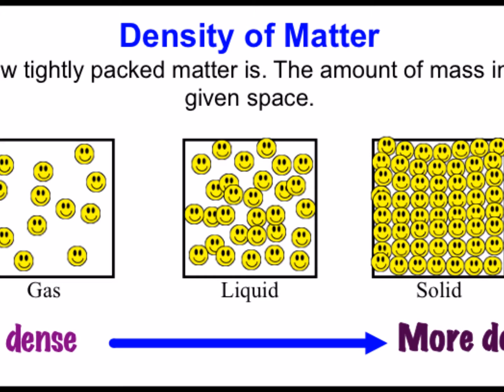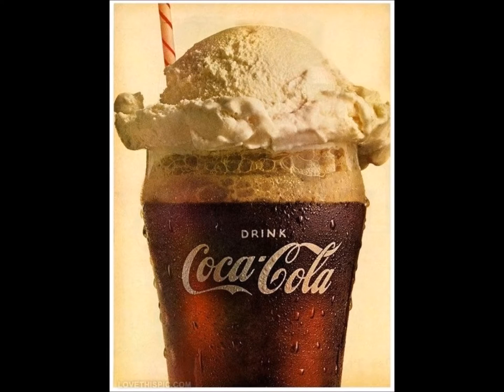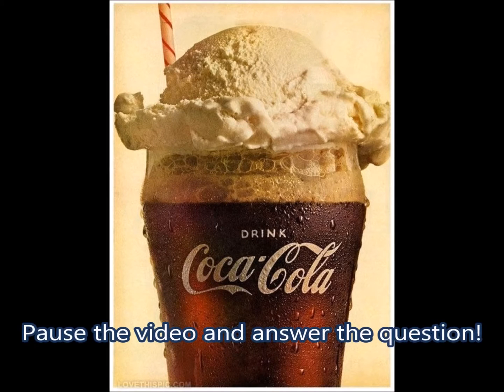Density of matter involves gases, liquids, and solids. The less dense the product is, the more likelihood of it to float. The more dense it is, the more likely to sink, such as the root beer float example on my screen. Take a look at it and describe what you see. You will see problems like this on your test where you have to type a response to a picture based on density.